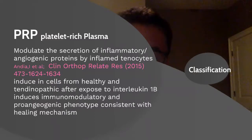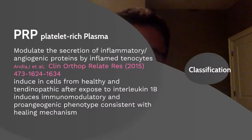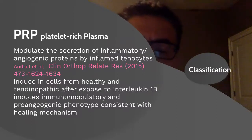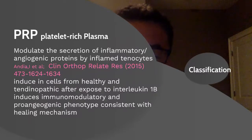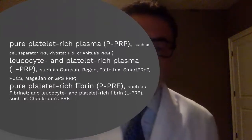For helping patients with these problems, we have platelet-rich plasma. PRP is very well known, but the results are still controversial — I think one reason is that not all PRP is the same. PRP works by modulating secretion of inflammatory and angiogenic proteins, inducing healthy cell responses in tendinopathy after exposure to interleukin-1 beta, and promoting immunomodulation and a pro-angiogenic phenotype consistent with healing mechanisms.